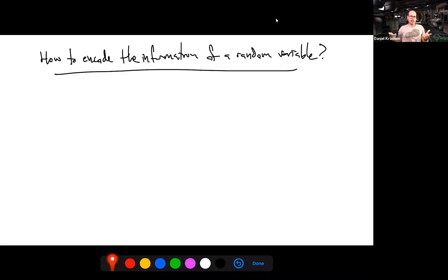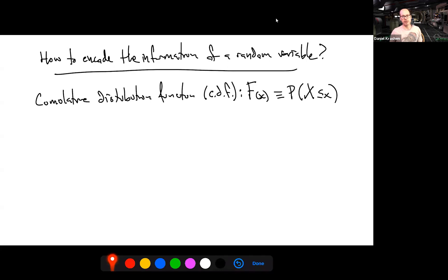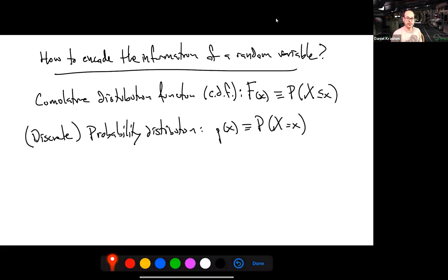Now that we know what random variables are, what are the nice ways of encoding the information in one? One option is the cumulative distribution function, or CDF. By definition, the CDF F_X(x) is the probability that the random variable X is less than x. Another way is to list probabilities that X takes specific values — this makes sense for discrete random variables — and we call that the probability distribution p(x) = P(X = x).